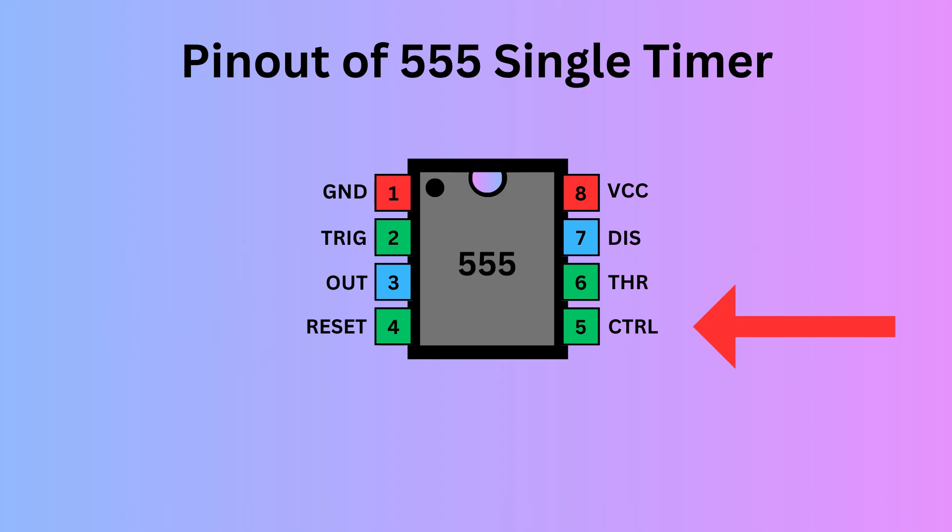Pin 5 is control. It allows you to control the threshold voltage levels that the internal comparators use to set and reset the flip-flop. Pin 6 is threshold. It monitors the voltage of the capacitor connected to the circuit.